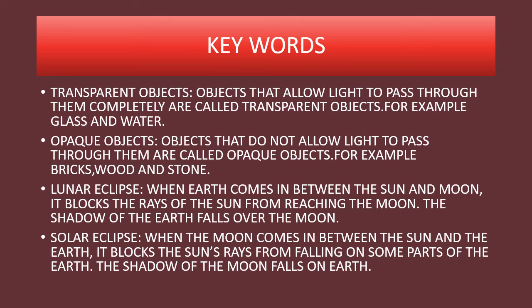Now, to sum up, we will see the keywords. Transparent objects: objects that allow light to pass through them completely are called transparent objects — for example, glass and water. Opaque objects: objects that do not allow light to pass through them are called opaque objects — for example, bricks, wood and stone. Lunar eclipse: when earth comes in between the sun and moon, it blocks the rays of the sun from reaching the moon, and the shadow of the earth falls over the moon. Solar eclipse: when the moon comes in between the sun and the earth, it blocks the sun's rays from falling on some parts of the earth, and the shadow of the moon falls on earth.